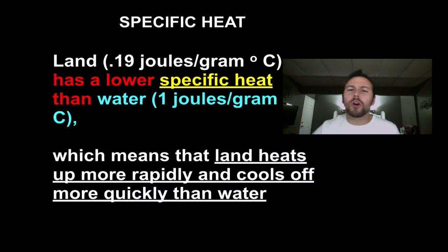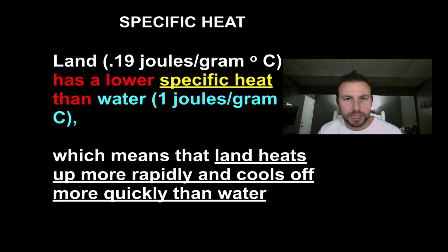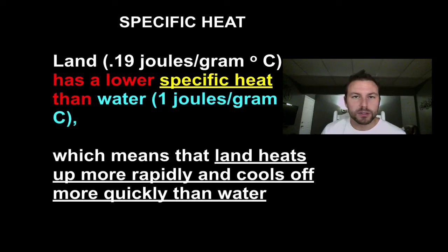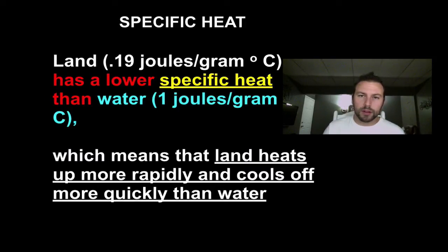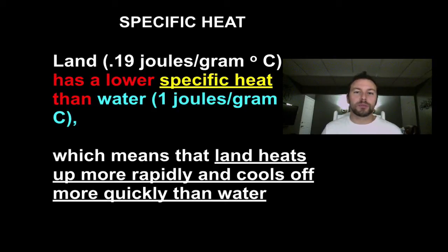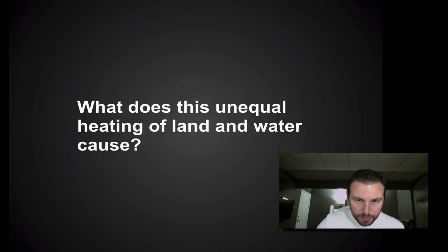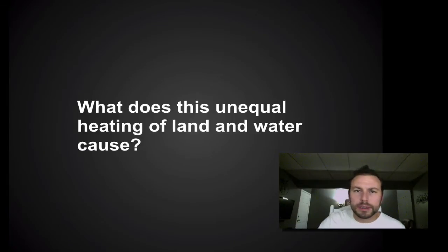Remember, land and sea breezes occur because of the differences in specific heat of water and land. Land has a very low specific heat, so it heats up and cools down very rapidly. Water has a higher specific heat, so it takes longer to heat up and longer to cool down. It's due to these differences in specific heat — this unequal heating — that allows land and sea breezes to occur on a daily basis.